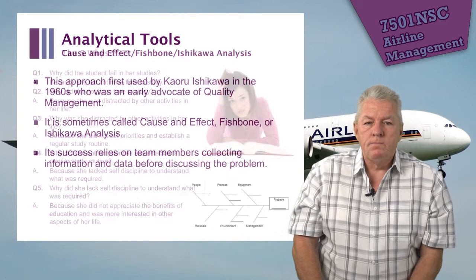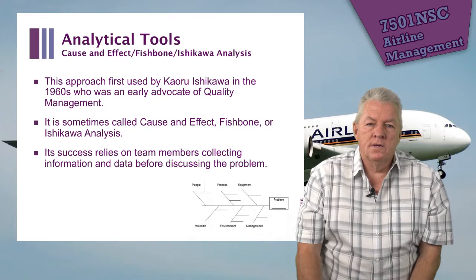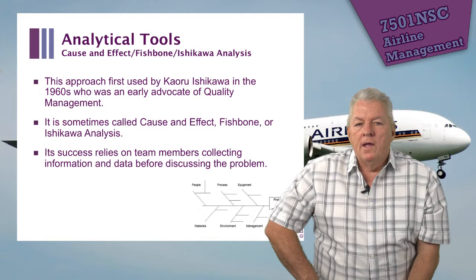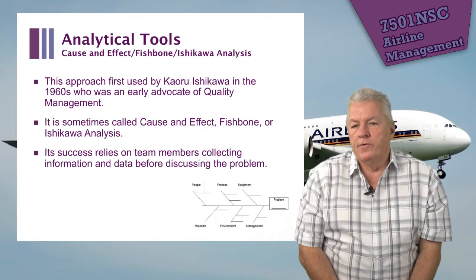Let's look at an extremely well-known tool: it's called cause and effect, or the fishbone, or Ishikawa analysis. It was first developed by Kaoru Ishikawa in the 1960s. He was an early advocate of quality management — in fact, a disciple of Deming. Its success relies on team members collecting information and data before discussing the problem.